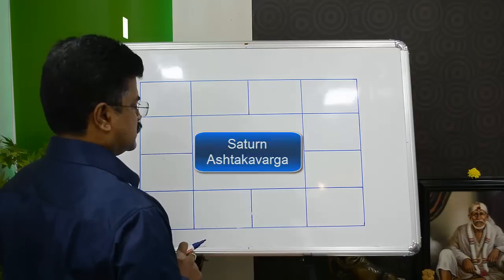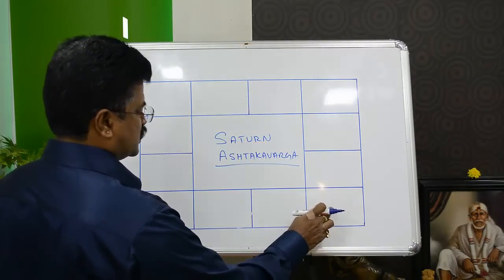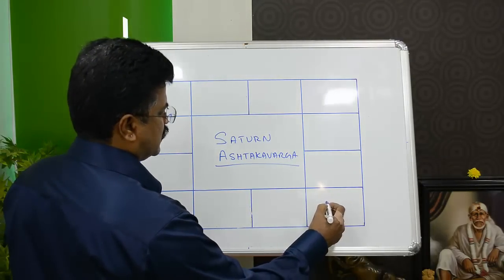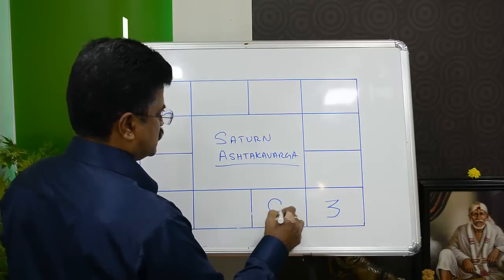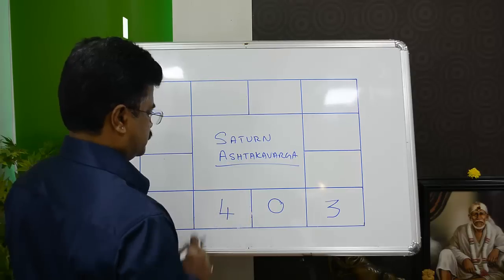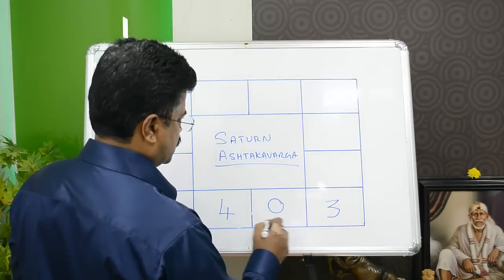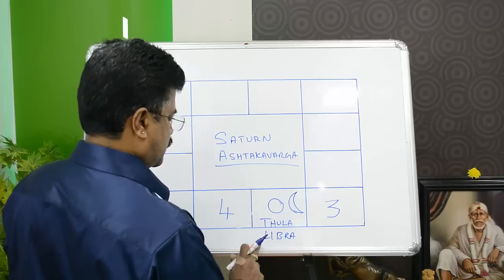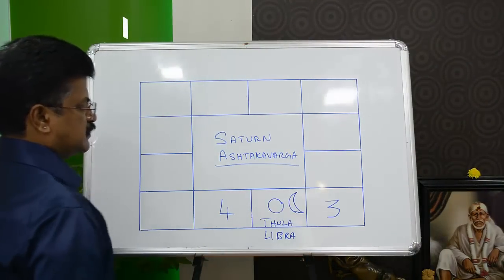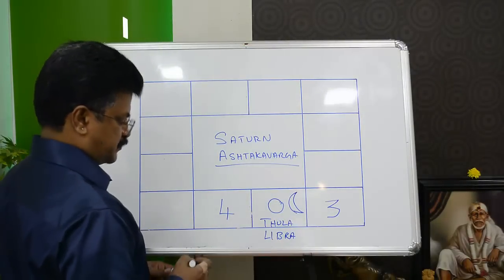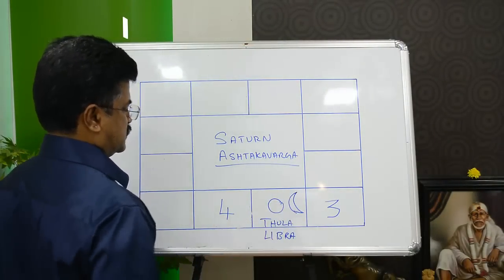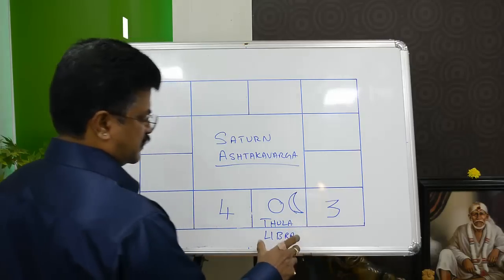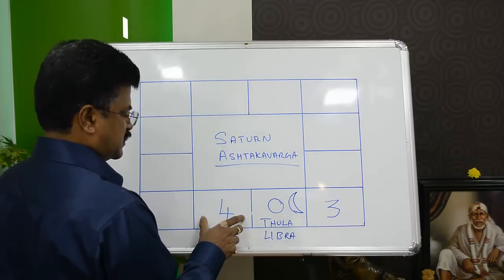I am just going to focus on these 3 signs for a particular reason. In this case, there are 3 points here, a 0 point here, and then a 4 point here. Suppose this person has the Moon here, making this person a Thula Rasi person, or Libra moon sign. When Saturn comes here, it is 7.5-year Saturn; when Saturn is here, it is also 7.5-year Saturn, and even here.